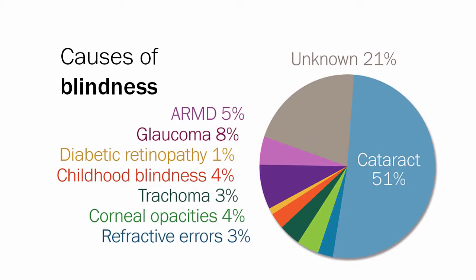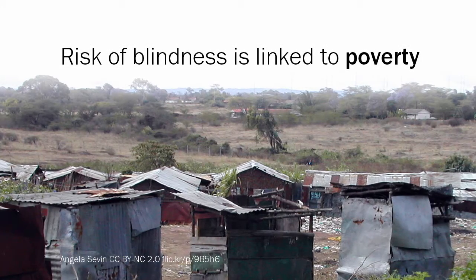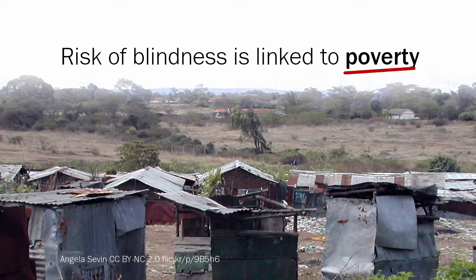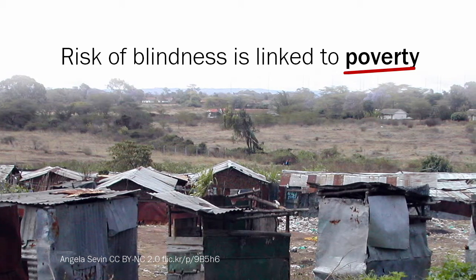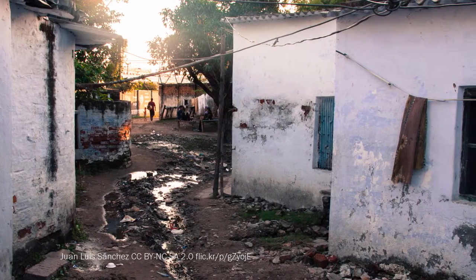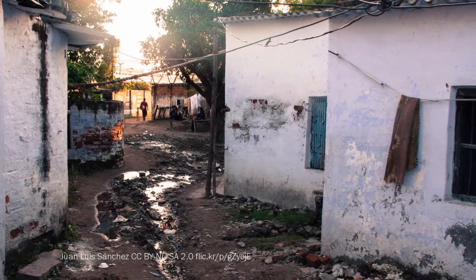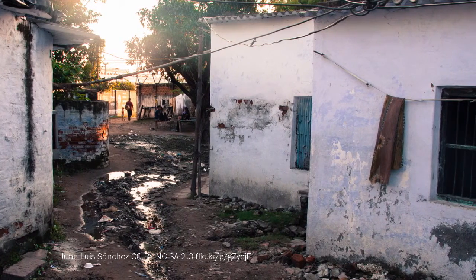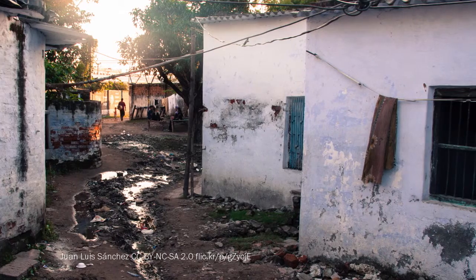Globally, cataract is the main treatable cause of blindness, as we have a relatively simple and effective surgical treatment for it. Risk of blindness is closely linked to poverty — very poor individuals and communities are at the highest risk, and poor communities are also more at risk from treatable and preventable causes of blindness. To address this issue, it is important to ensure that eye care services are accessible by all.